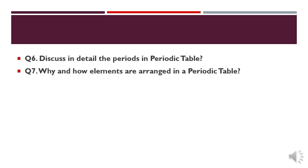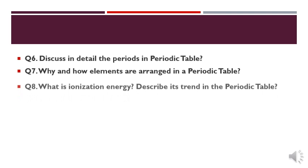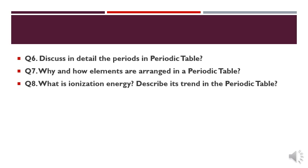Question number 7: why and how are elements arranged in the periodic table? The answer will be a detailed description. You will tell the topic number and discuss it. Question number 8: what is ionization energy? Describe its trends in a periodic table.